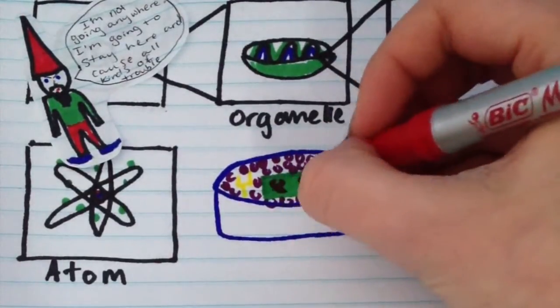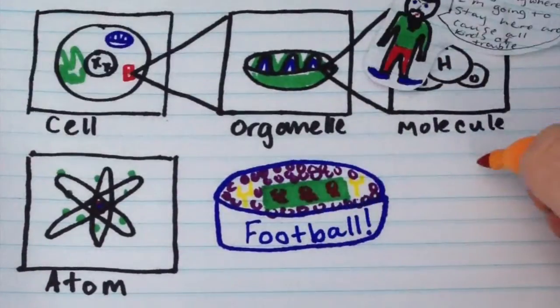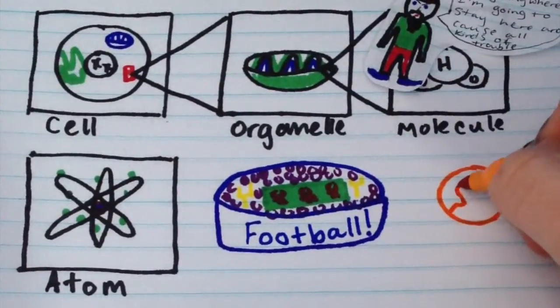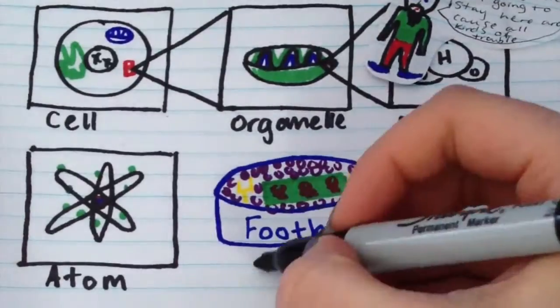Now wait a second. Let's back up a little. Just how small is an atom? If an atom were to be blown up to the size of a football stadium, the nucleus would be about the size of a penny. Pretty crazy, huh? Just wait. It gets crazier.